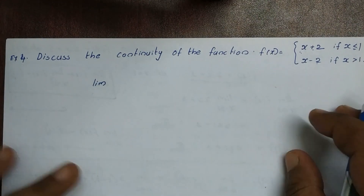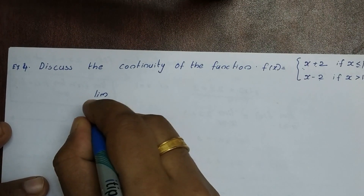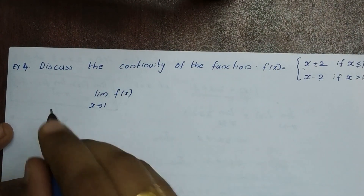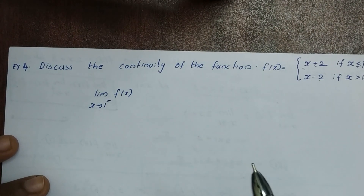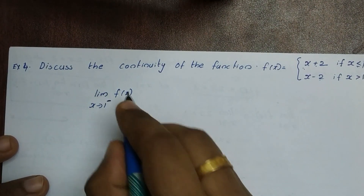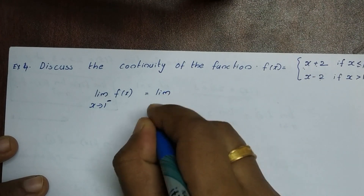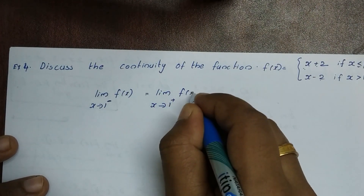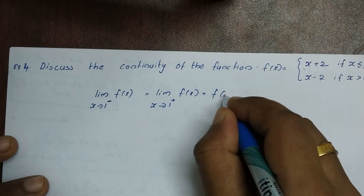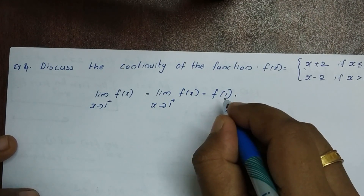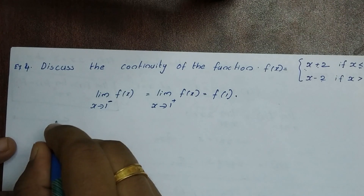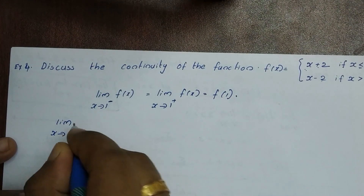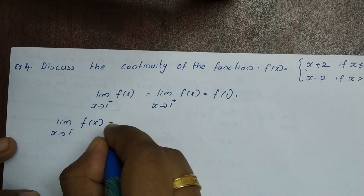So, limit x tends to 1 of f(x). For continuity, the left-hand limit as x tends to 1 minus of f(x) must equal the right-hand limit as x tends to 1 plus of f(x), which must equal f(1).